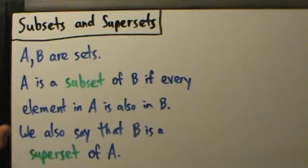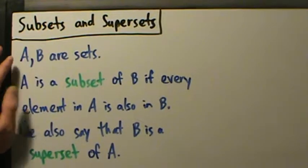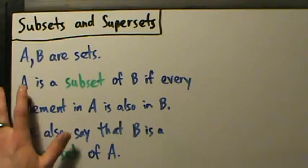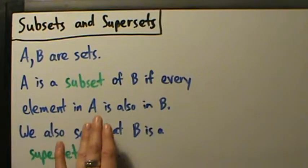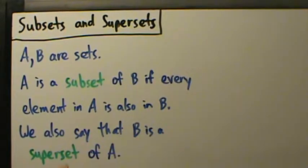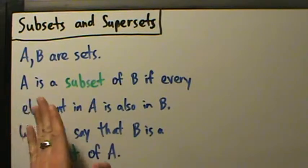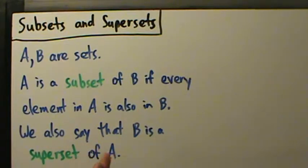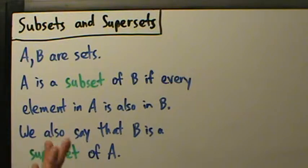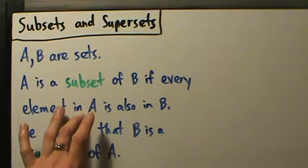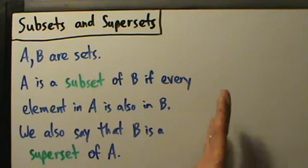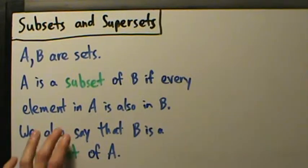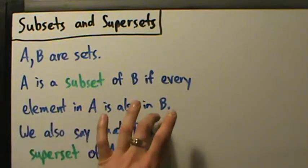So let's say we have two sets, A and B. A is a subset of B if every element in A is also in B. The definition kind of makes sense — it's almost what you'd think. Anything that's in set A is also in set B. Now B may have extra stuff; that doesn't really matter.